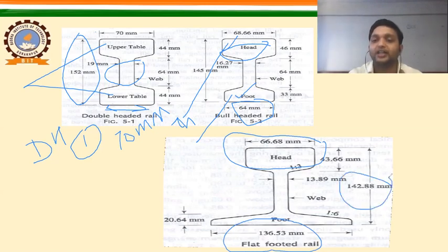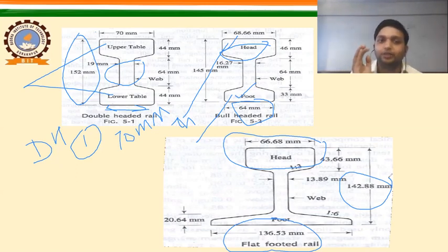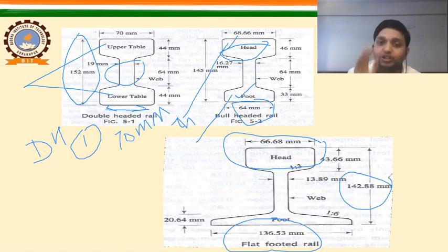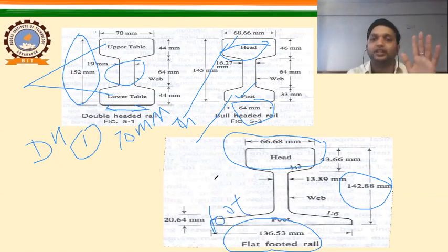The three rail sections have different characteristics. In double headed rail, the foot and head are the same size. In bull headed rail, the head is more than the foot. In flat footed rail, the foot is the enlarged part in comparison to the head. So to remember: double headed — both are same; bull headed — head is more than foot; flat footed — foot is more than head.